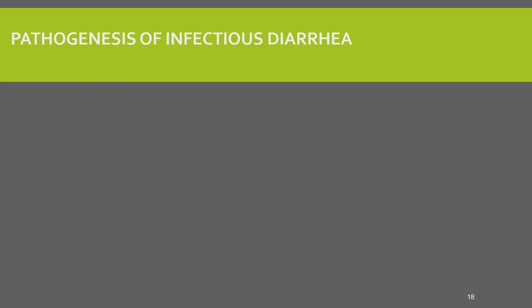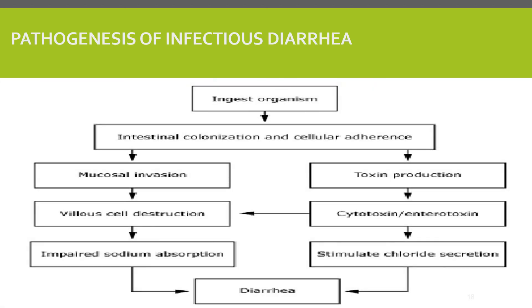When we see pathogenesis of infectious diarrhea, the ingested organism causes either intestinal colonization with cellular adherence, leading to mucosal invasion or toxin production. If it causes mucosal invasion, it causes villous cell destruction, which impairs sodium absorption and causes diarrhea. Whereas if it causes toxin production, it stimulates chloride secretion and causes diarrhea.